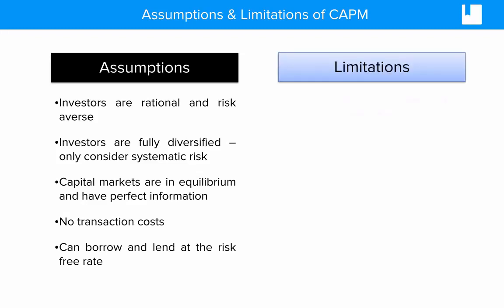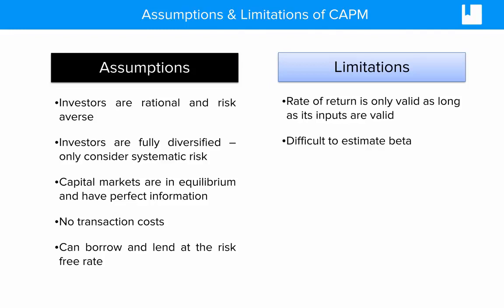Some of the limitations of the CAPM are that, as with any model, the rate of return or the output are only as valid as the quality of the inputs. It's also very difficult to estimate beta. Should we look one year or three years or five years back, tracing a particular stock with its market? You saw that in order to calculate beta, we need to know the covariance between the stock and the market, and the variance of the market.